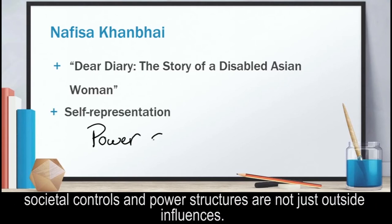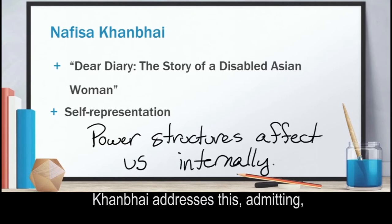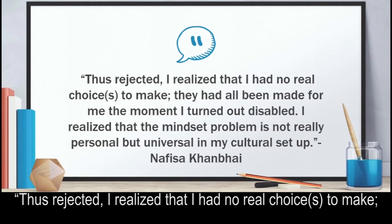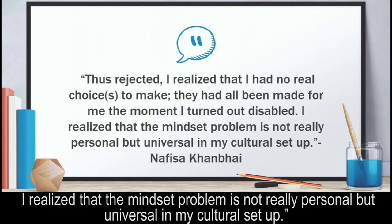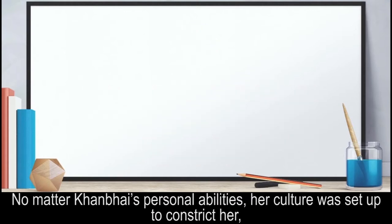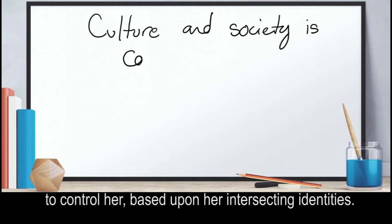This article takes the form of self-representation, showing that societal controls and power structures are not just outside influences. Kanbai addressed this, admitting, Being thus rejected, I realized that I had no real choices to make. They'd all been made for me the moment I turned out disabled. I realized that the mindset problem is not really personal, but universal in my cultural setup. No matter Kanbai's personal abilities, her culture was set up to constrict her, to control her.